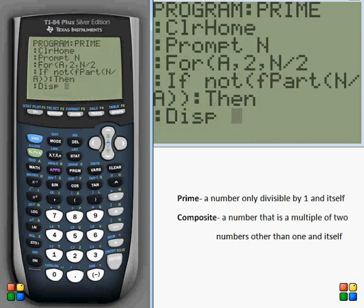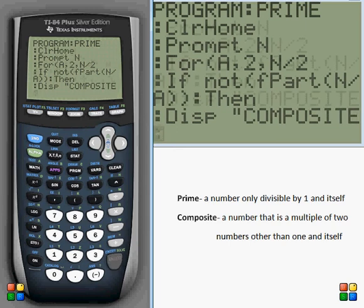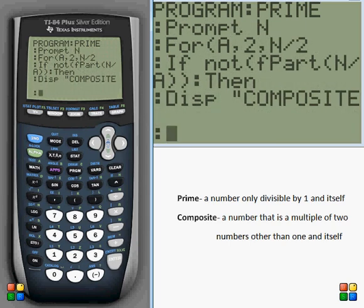So we can go ahead and display composite. So the next thing that we want to do is end the program if it finds the number is composite. We don't need to keep going through our for loop because we don't need to find out any more factors. It just needs that factor other than one and itself. So if we find that, we want to display composite and then end immediately.